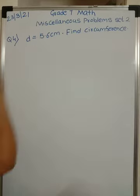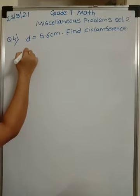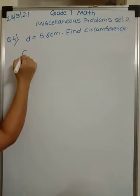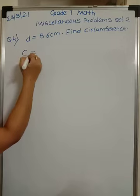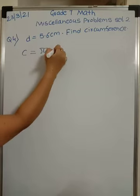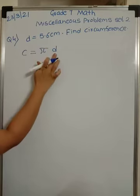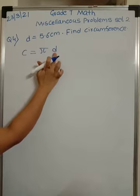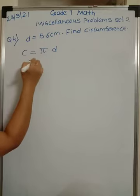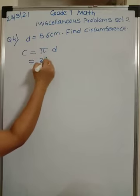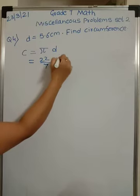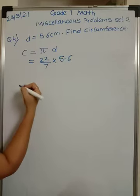So diameter is given and you have to find circumference. What is circumference of a circle? Circumference is denoted by C and circumference is nothing but π D or it is 2π R, but 2R is D. So this is nothing but 22/7 into diameter is 5.6.